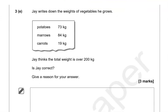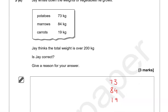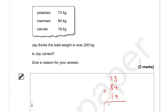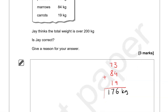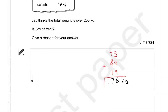Jay writes down the weights of vegetables he grows. Jay thinks the total weight is over 200 kilograms — is Jay correct? We add them all together: 73 kg, 84 kg, and 19 kg. Using a calculator gives us 176 kilograms. Jay thinks the total is over 200 kg, but 176 is not over 200, so Jay is not correct.